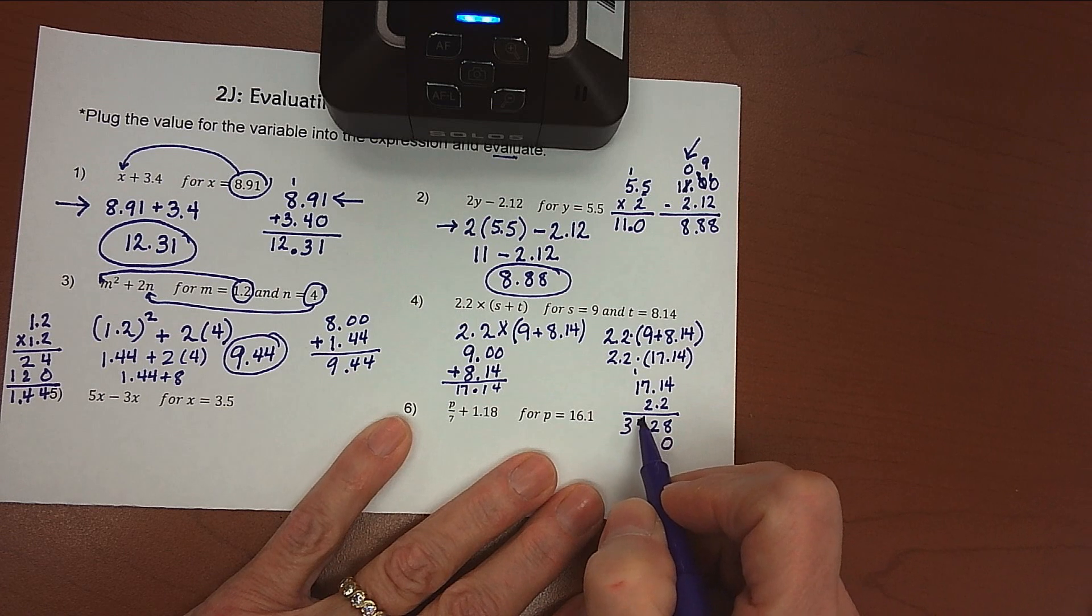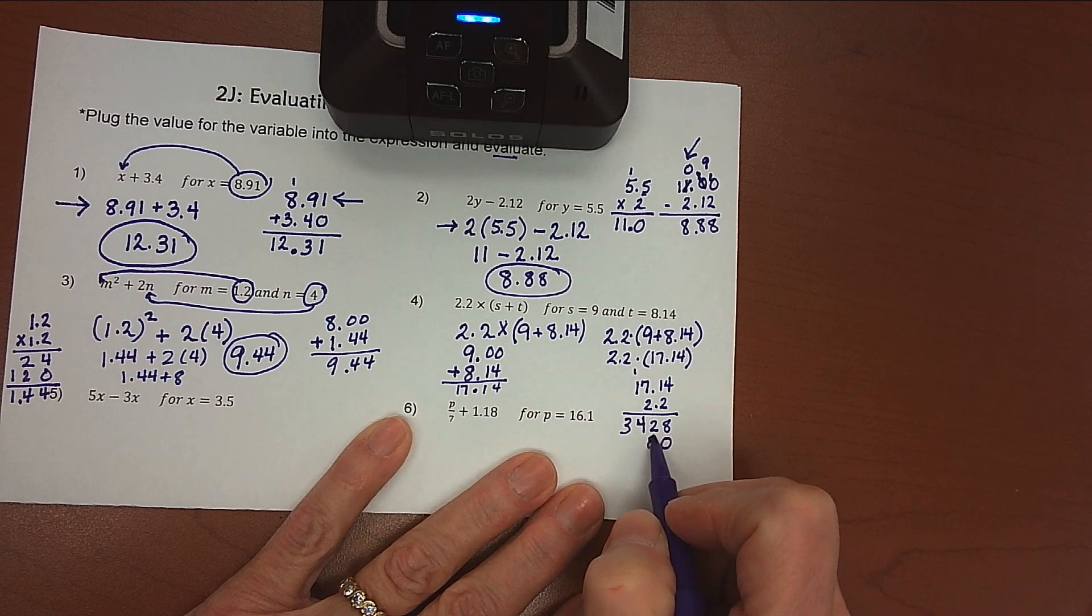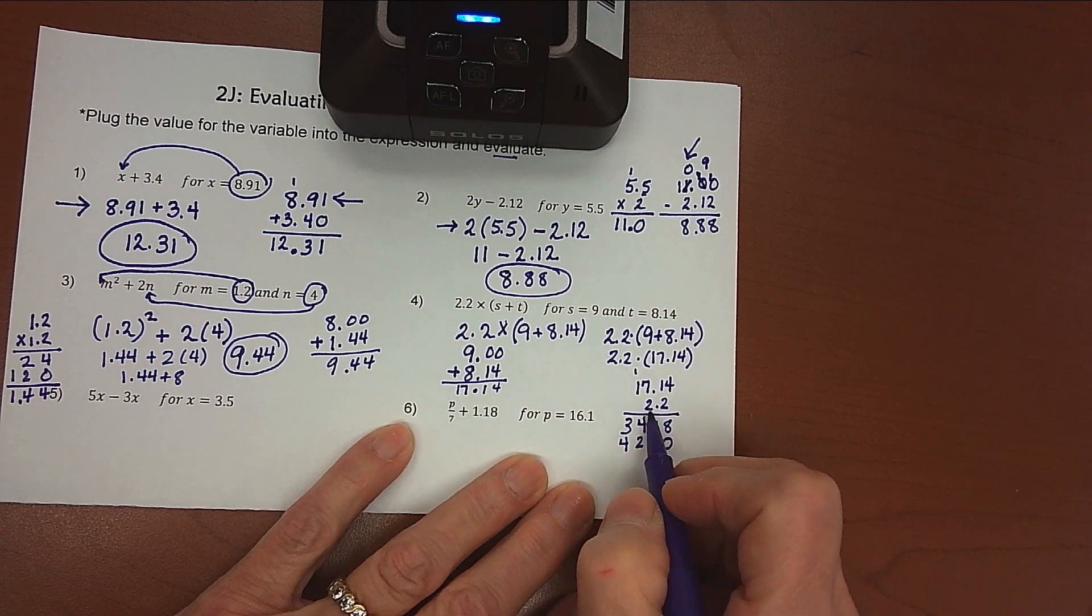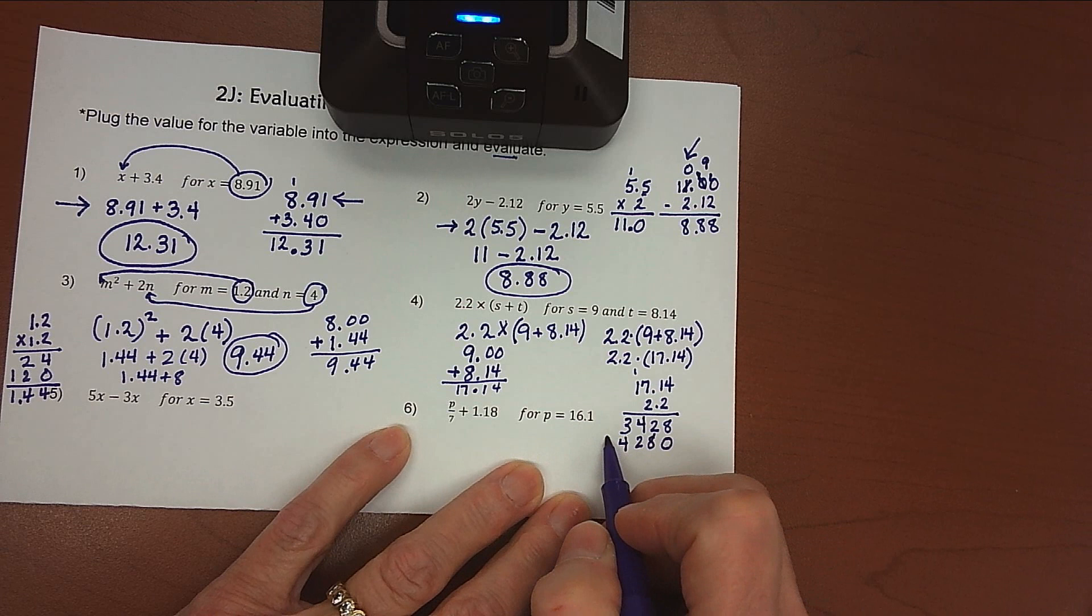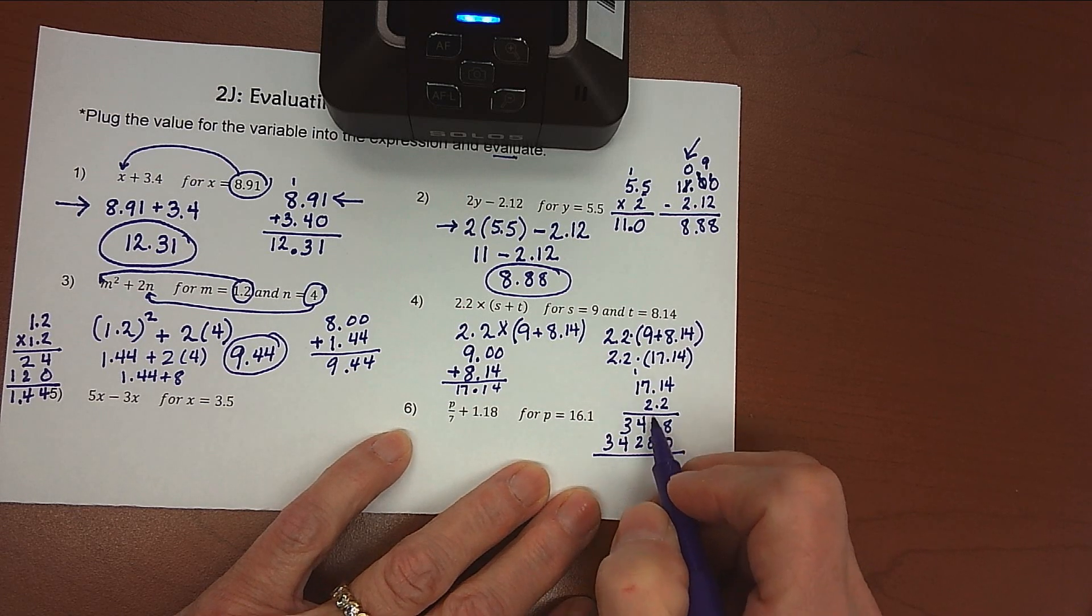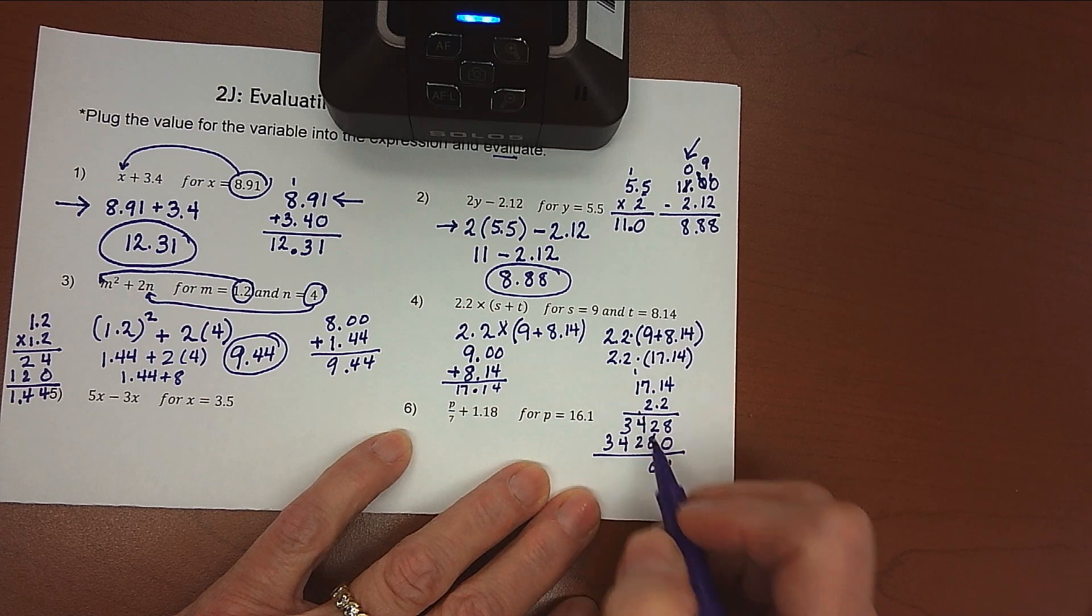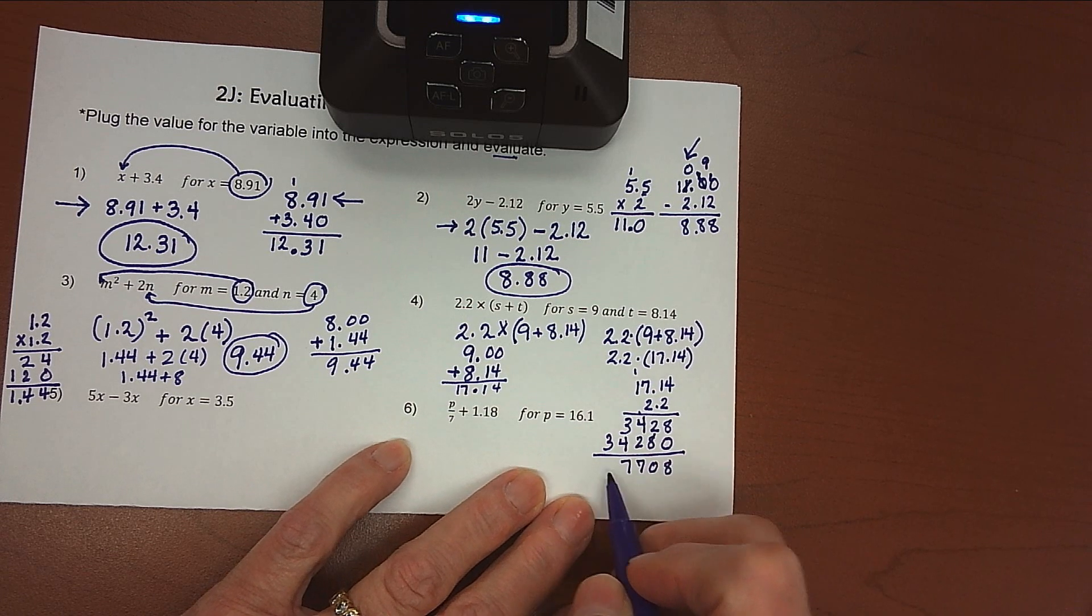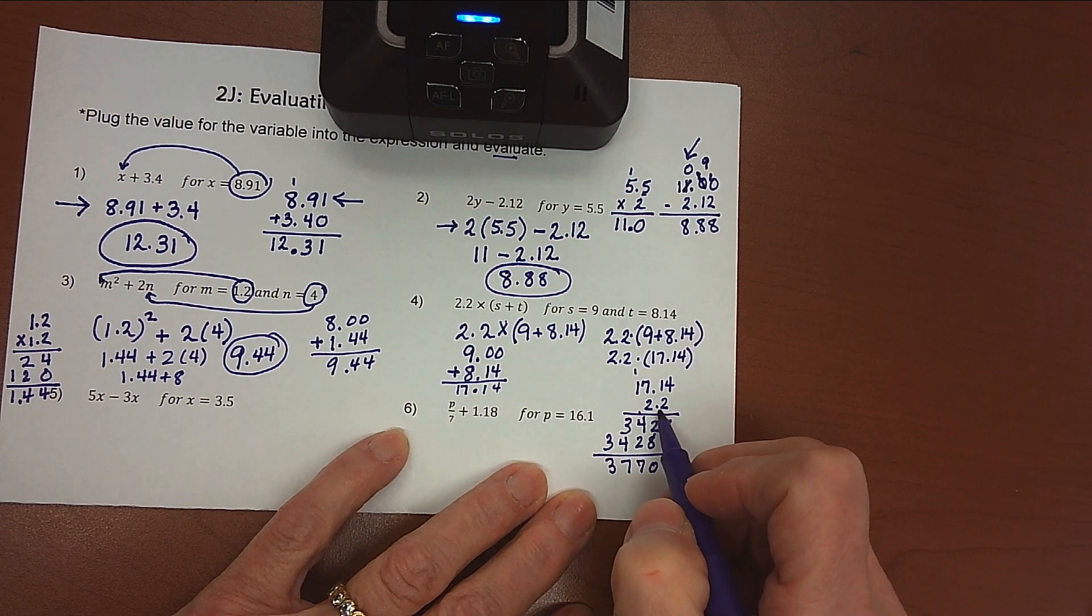And do that all again. 2 times 4 is 8. 2 times 1 is 2. 2 times 7 is 14. Put my 4 down. Carry my 1. 2 times 1 is 2, plus 1 is 3. And now add everything up. 8, 10. Put down a 0. Carry a 1. 4, 5, 6, 7. 7 and 3. And now I care about those decimals.